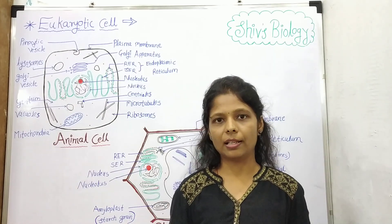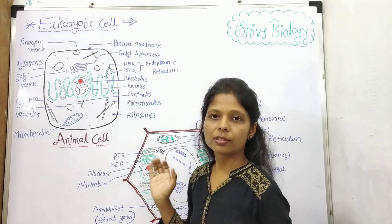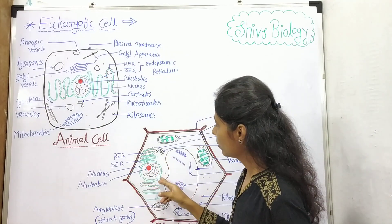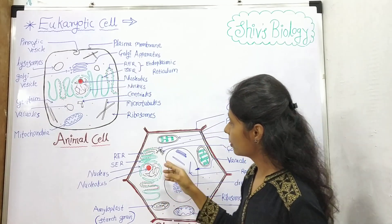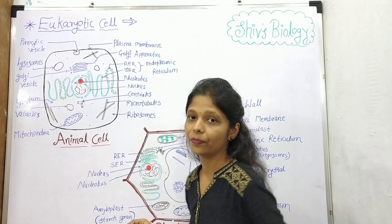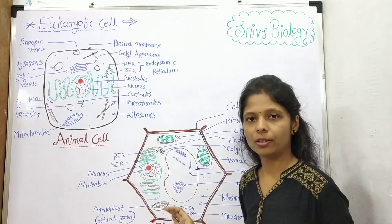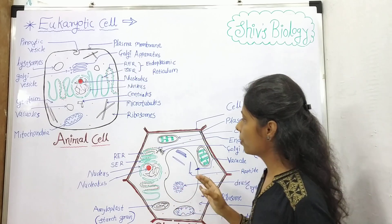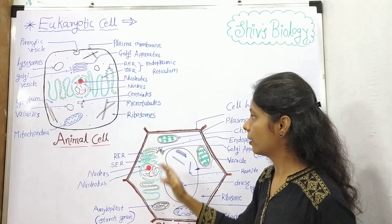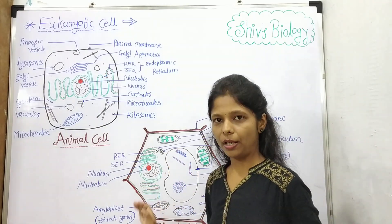Eukaryotic cells consist of well membrane-bound cell organelles with a cell nucleus and nuclear membrane. This separates the genetic material from the cytoplasm. In eukaryotic cells, compartmentalization is occurred — compartmentalization of cytoplasm means different kinds of organelles or compartments are occurring in cytoplasm.